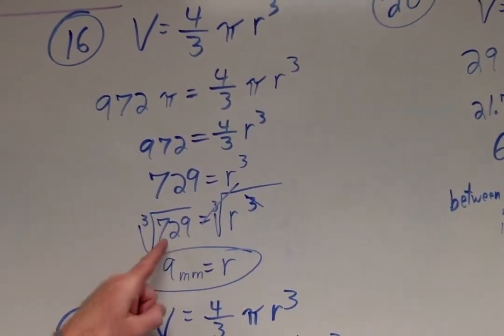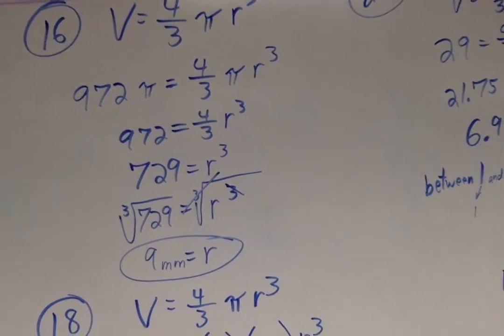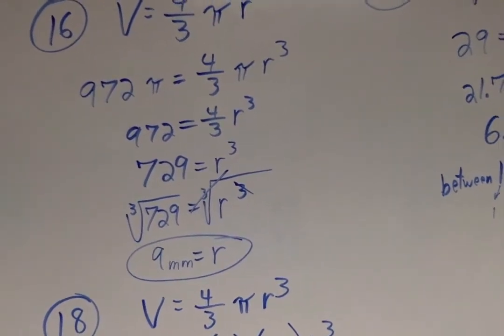Because once I take the cube root of both sides, the cube root of r cubed gives me just r! Well, the cube root of 729, everybody, is whole number 9! Therefore, the radius in that one was 9 millimeters!